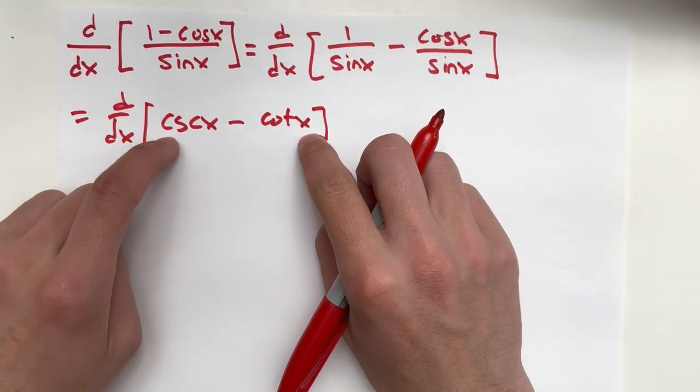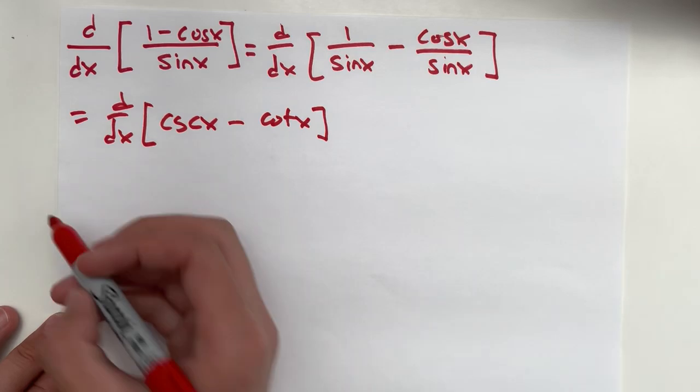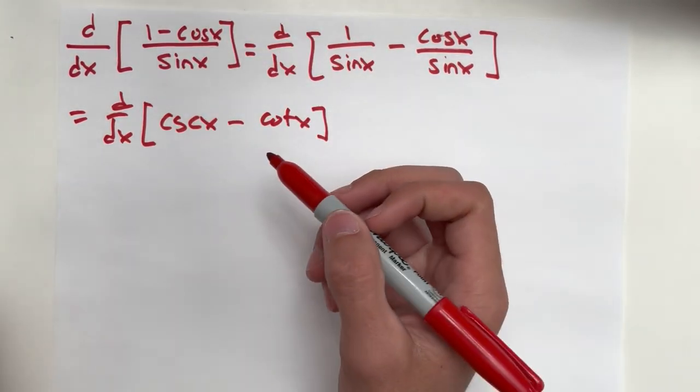And now this is much easier to differentiate than the quotient rule of the 1 minus cosine x over sine x.